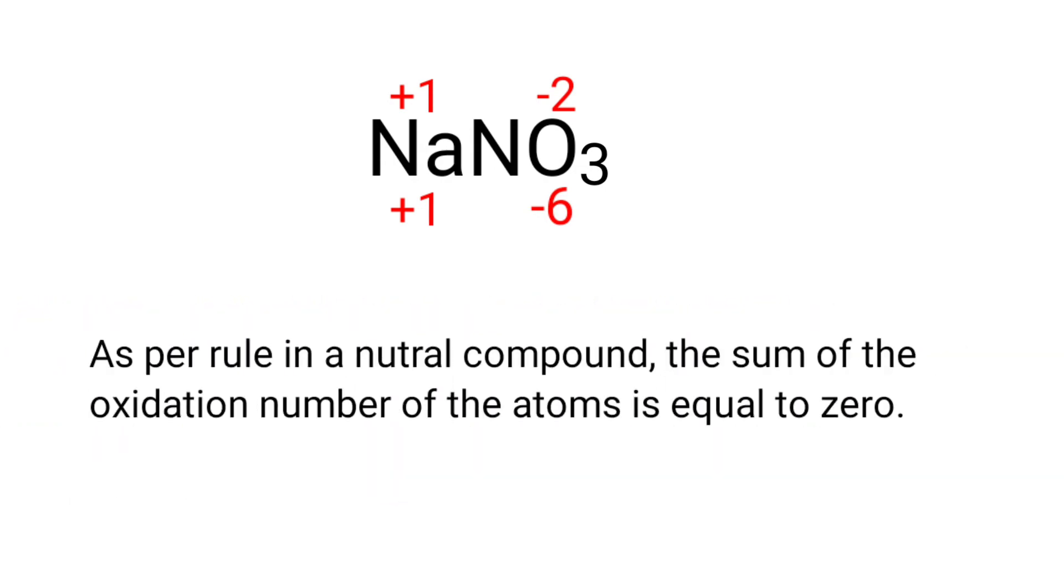As per rule in a neutral compound, the sum of the oxidation number of the atoms is equal to 0. So the numbers along the bottom must add up to 0, meaning the number under N must be plus 5.